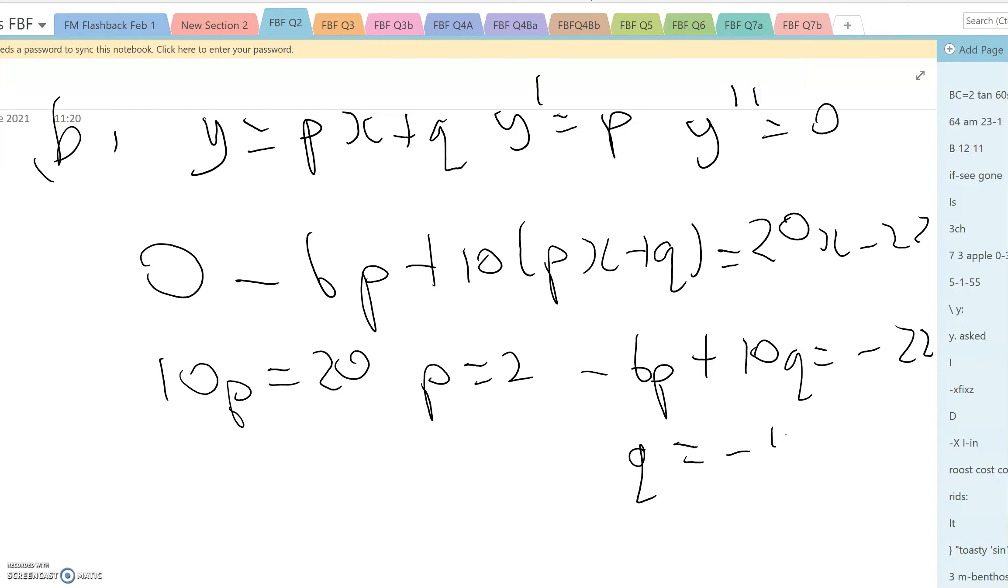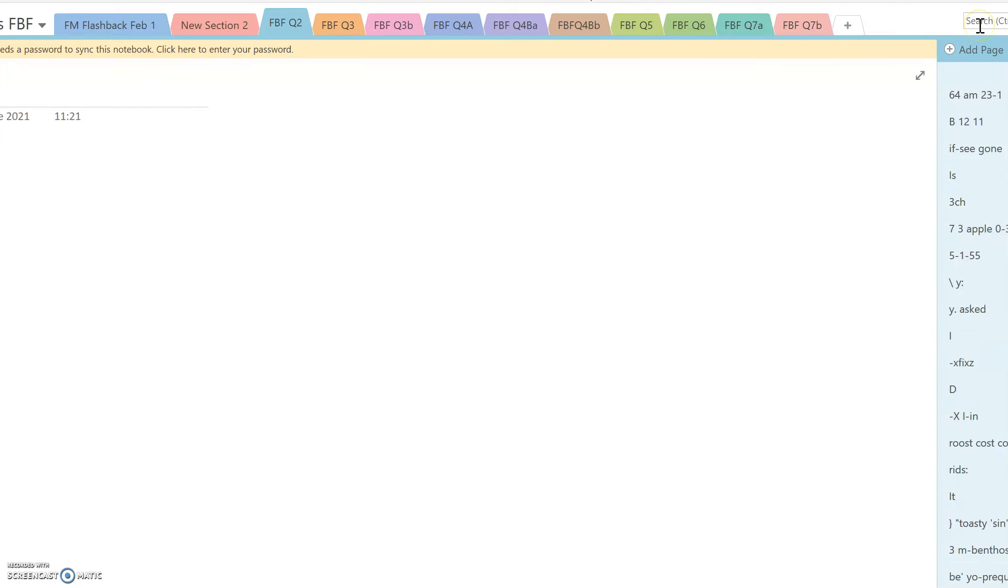So that's telling us that the general solution of the equation in part B is going to be y is e to the 3x, a cos x plus b sine x plus 2x minus 1.